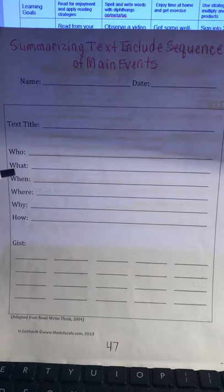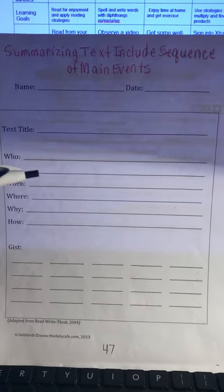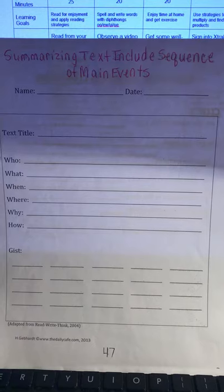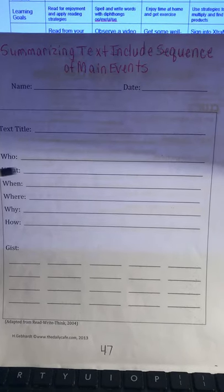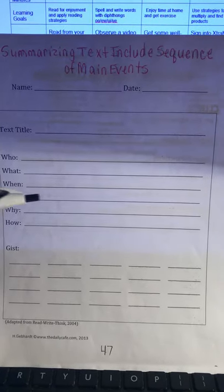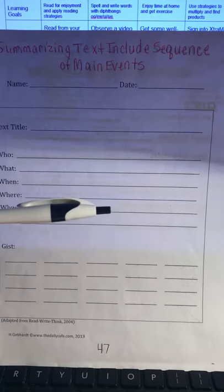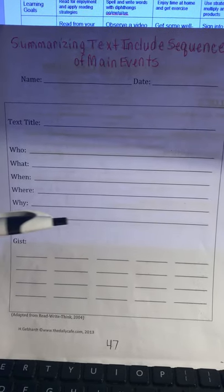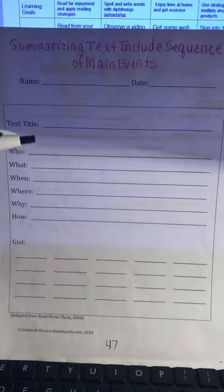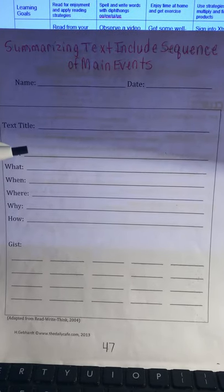List what happened, when did it happen, where did it happen, why did it happen, and how did it happen. Try your best to remember you don't have to list anything in a complete sentence.